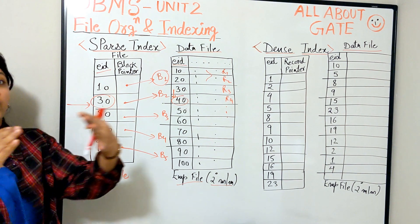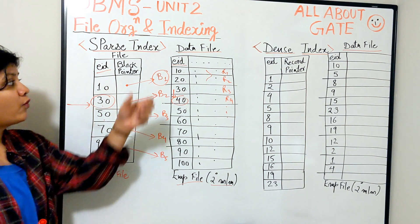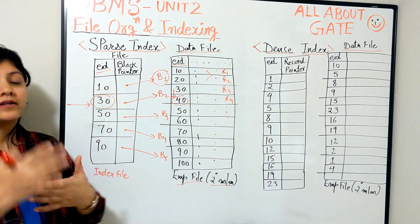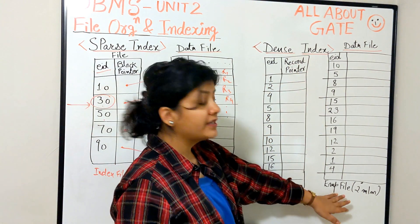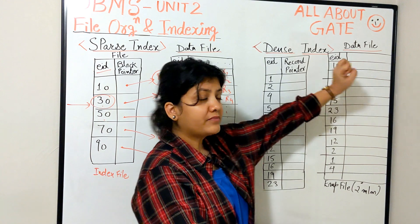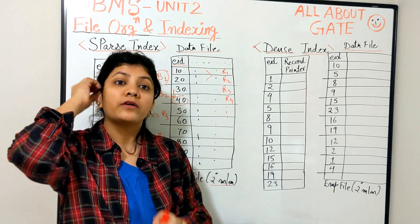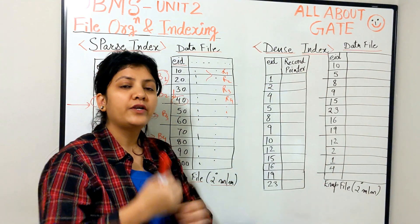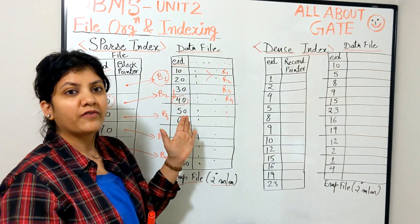This is just a type of index file — it's not saying it's primary, clustered, or secondary. It's just saying this kind of file is designed based on the nature of the field used for making the index. Now let's go to the second type: the dense index file. Here again I have the employee file on secondary memory, and this time the employee IDs are not sorted.